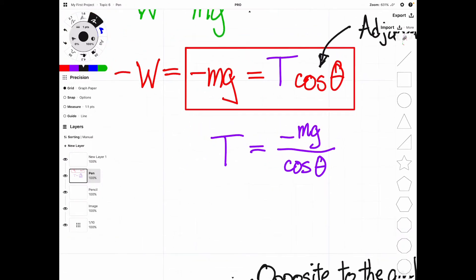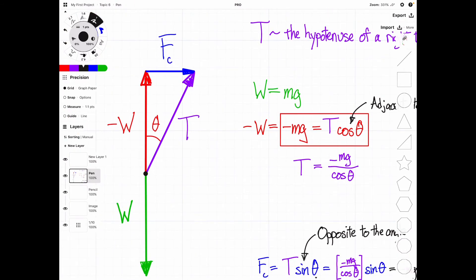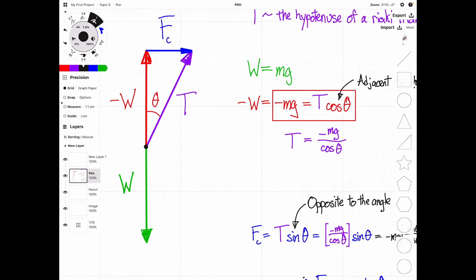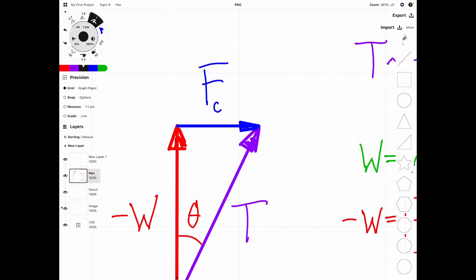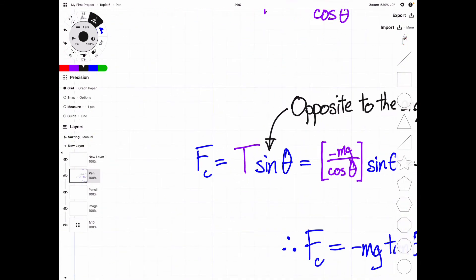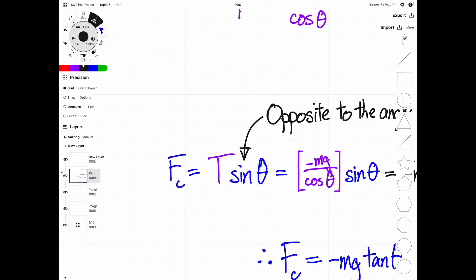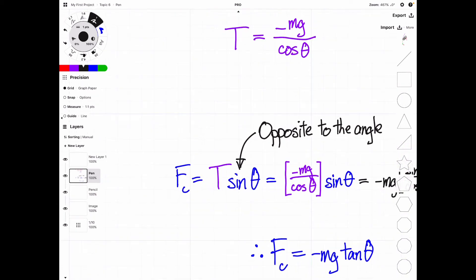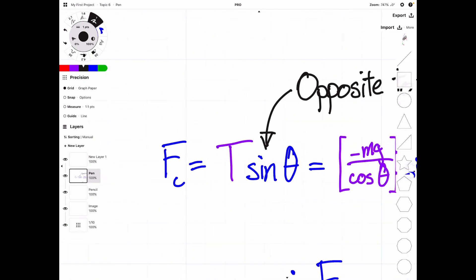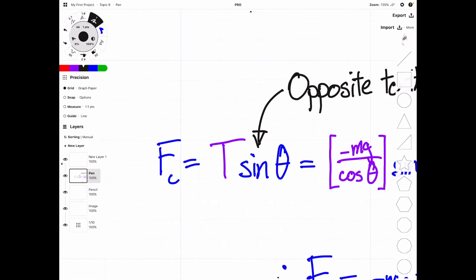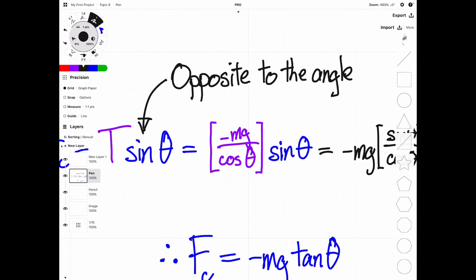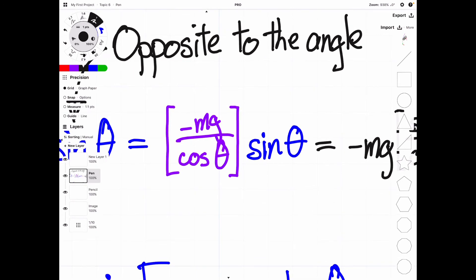So that is one important piece of the puzzle that we've now solved. So we next look at centripetal force, and what we're going to find is that centripetal force is given by a sine function, and that is because it is opposite to the angle. So centripetal force will be equal to T sine of theta, and we will then substitute our value for T which we solved earlier, giving us this value.